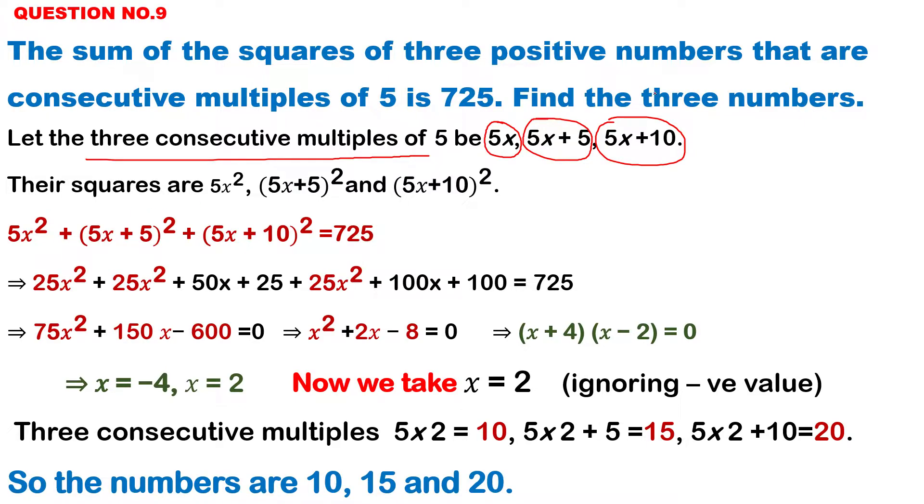Then the question says they are squares, remember this point. So, 5x ka square, 5x plus 5 ka square, then 5x plus 10 ka square. The question is that the sum - all these three numbers sum - 5x whole square, then 5x plus 5 whole square, then 5x plus 10 whole square sum, that is 725.